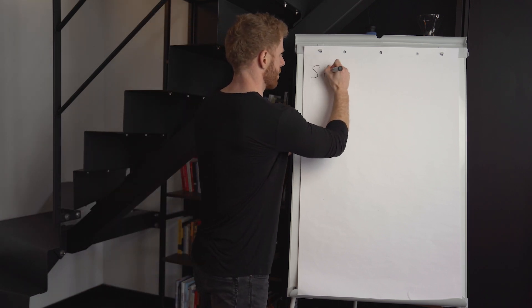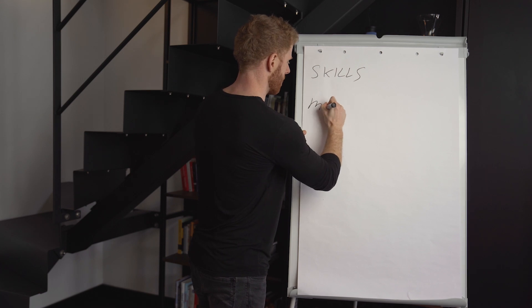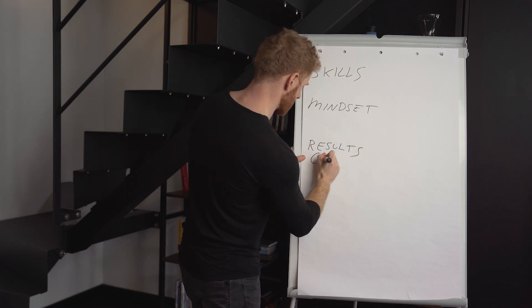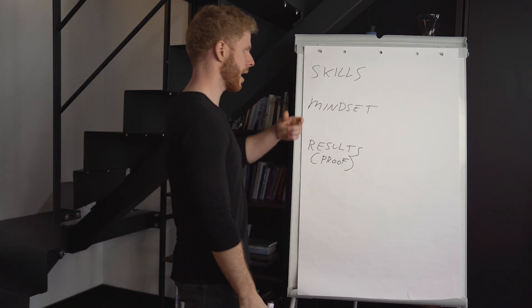So let me just quickly write them out, and then we'll look at each one, and then we'll look at why if you have one of these missing, or maybe more of these missing, you're not going to be getting the results that you want with sales. So the first one is skills, the second one is mindset, and the third one is results, or you could also say proof.